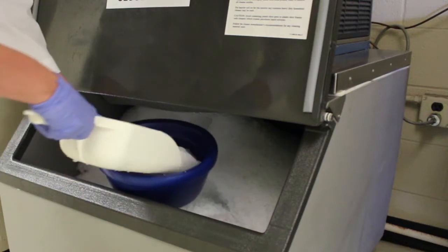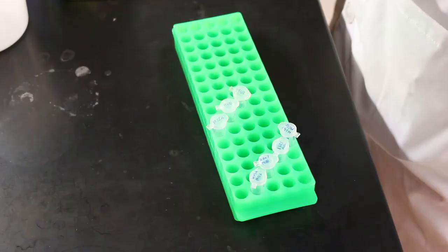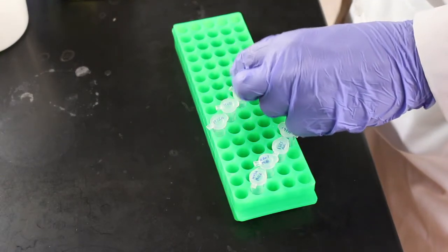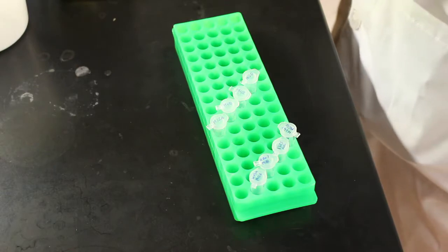First things first, fill a container with ice. Label some 1.7 milliliter tubes. You'll need one tube per sample and an additional two tubes that will contain the forward and reverse primers.